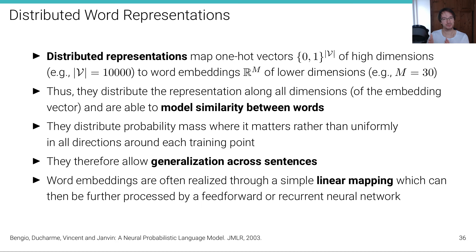Word embeddings — the mapping from one-hot vectors to R^m — are often realized through a simple linear mapping: basically just a matrix multiplication where the one-hot encoding goes in and out comes a lower-dimensional vector. It's essentially just a matrix lookup, and inside the matrix these embeddings are stored. These embeddings become the representation of the word, and are then further processed by a feed-forward or recurrent neural network or a transformer model.